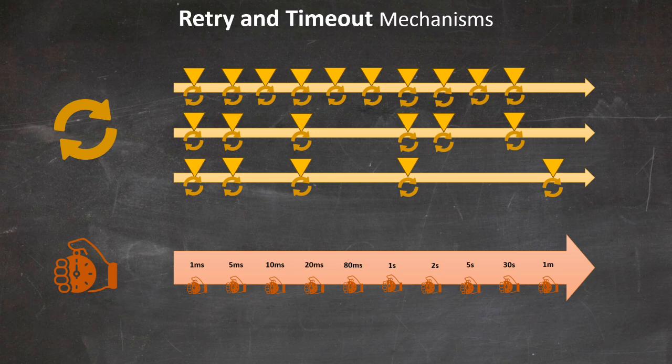The key is to balance these mechanisms. Too aggressive retries can exacerbate problems, while overly cautious timeouts might prematurely abort valid operations. It's about finding the right equilibrium for your specific use case. Well-implemented retry and timeout strategies can significantly improve your system's resilience to transient failures, ensuring smoother operation in the face of temporary disruptions.